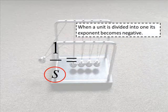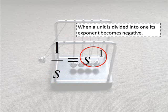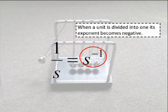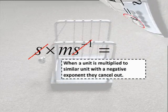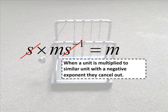When the unit of a fundamental quantity is divided into 1, its exponent becomes negative 1. When a unit is multiplied to another unit that contains a negative exponent of that unit, they cancel.